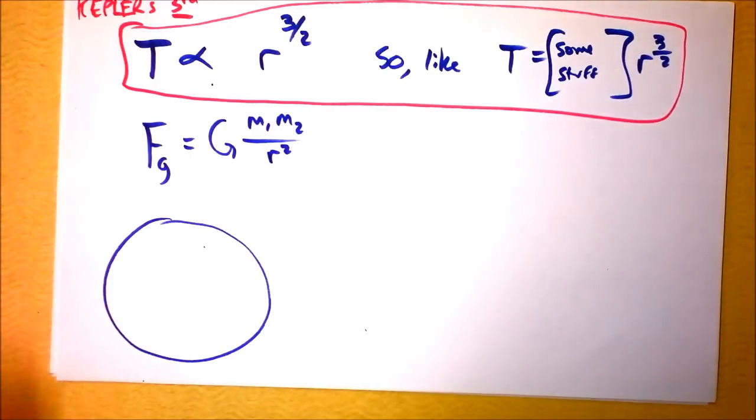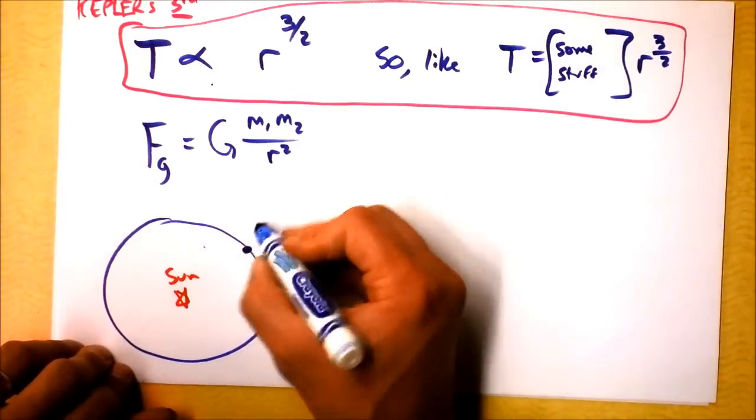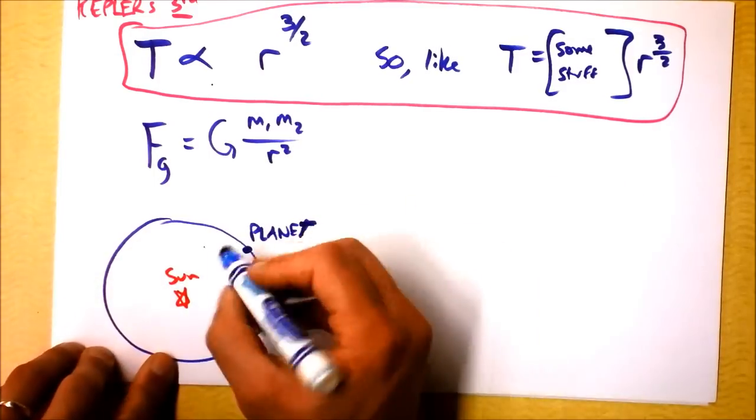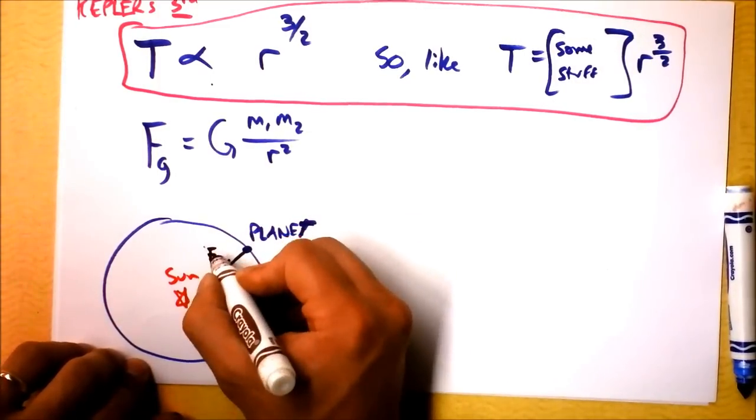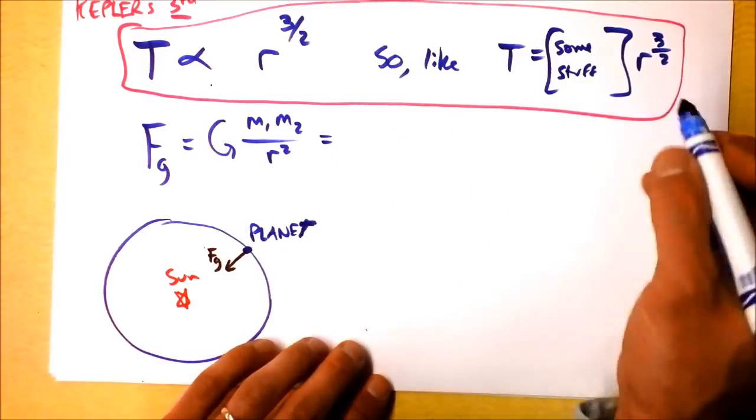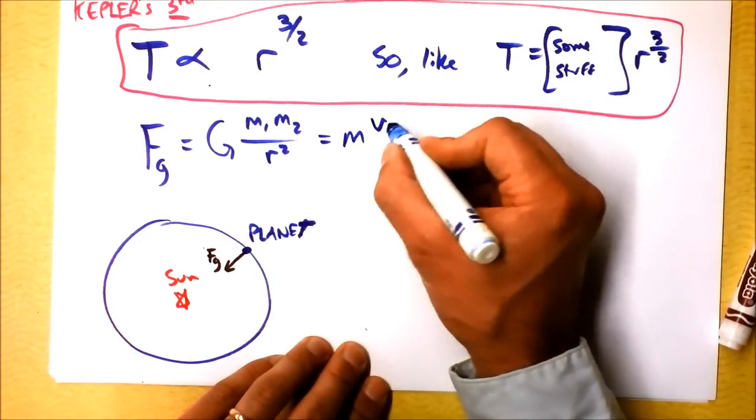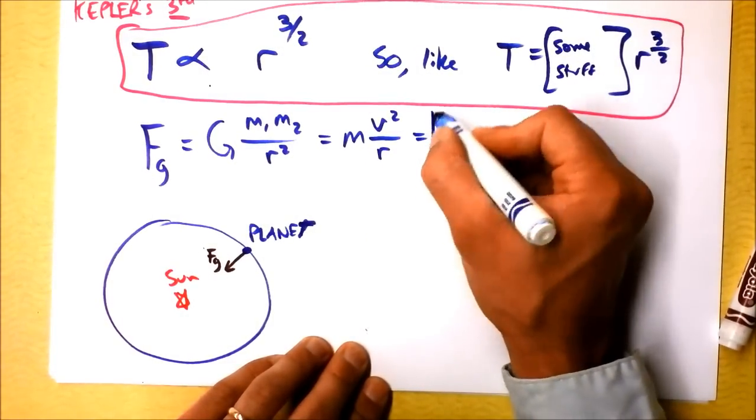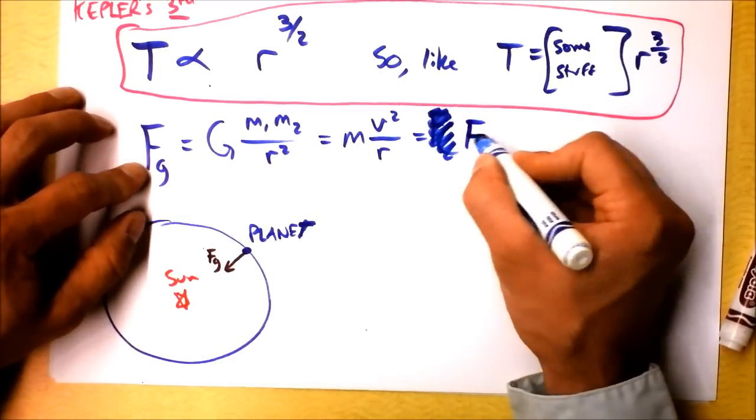So, for instance, if we put the sun in here, and we have a planet out here, we've got the sun and a planet, and the force of gravity is providing the centripetal force. So I'm going to say is providing or is equal to the centripetal force, which is m times v squared over r. And that's the centripetal force, Fc. Force of gravity is the centripetal force.